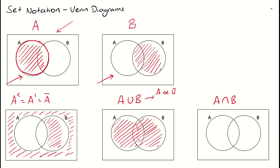Now when we look at the intersection, we're looking at A and B. Instead of mushing them together and adding them, we want to look at what they have in common. If we look at our A Venn diagram and our B Venn diagram and see what they have in common — they've both got this little shaded bit here. So that would be the intersection between A and B. Now with these basics revised, we'll take a look at some trickier examples.